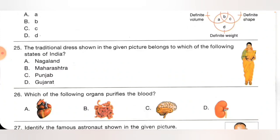Twenty-fifth one: the traditional dress shown in the given picture belongs to which of the following states of India? Option A: Nagaland, B: Maharashtra, C: Punjab, D: Gujarat. The given picture belongs to the traditional dress of Maharashtra. Option B is the correct answer.